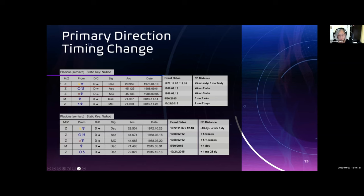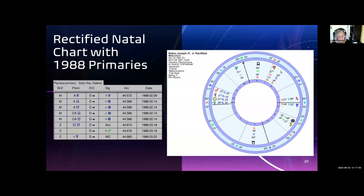With the new rectified time, it brings it from months down to days and weeks. It's recommended that eight to ten events validate the rectified time, but this example gives an idea of how to rectify using primary directions.